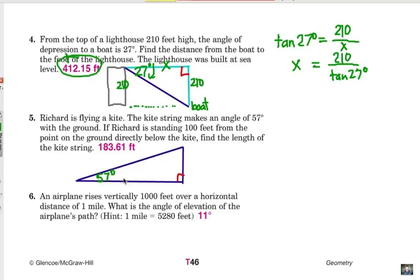Number five. Richard is flying a kite. The kite string makes an angle of 57 degrees with the ground. There's our angle right there. If Richard is standing 100 feet from the point on the ground directly below the kite, this distance right here is 100 feet. Richard is here and right below the kite is here. Find the length of the kite string. A little twist. We're actually going to be looking for the hypotenuse in this case, x.